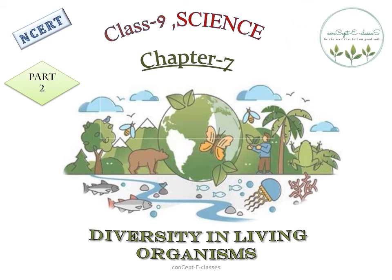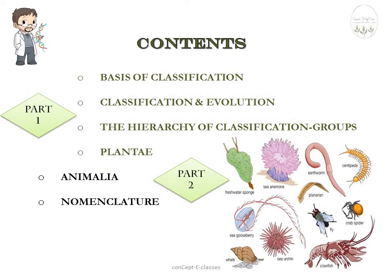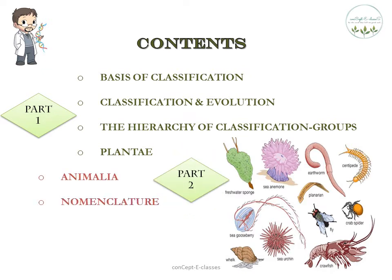This is Concept Classes, and today we'll deal with Part 2 of Chapter 7, Class 9 Science: Diversity in Living Organisms. In Part 1, we discussed the basis of classification, characteristics like whether organisms have a nucleus, whether they are unicellular or multicellular, classification and evolution, and the hierarchy of classification — kingdom, phylum, class, order, family, genus, and species. All living organisms are divided into five kingdoms: Monera, Protista, Fungi, Plantae, and Animalia. In Part 1 we covered up to Plantae. In Part 2, we'll first see Animalia, then nomenclature.